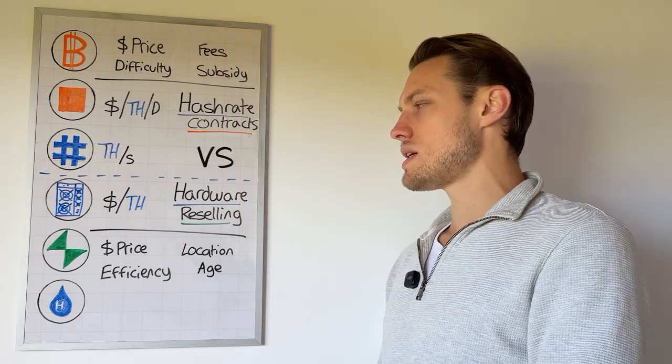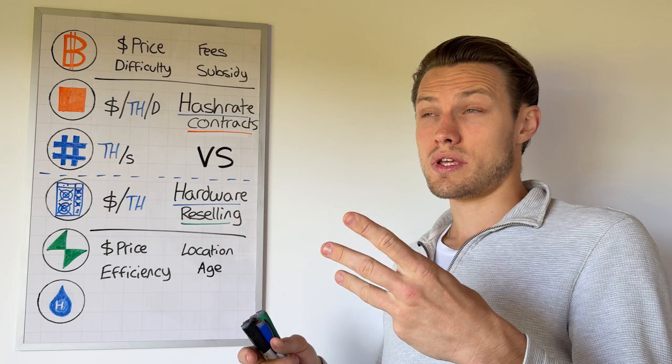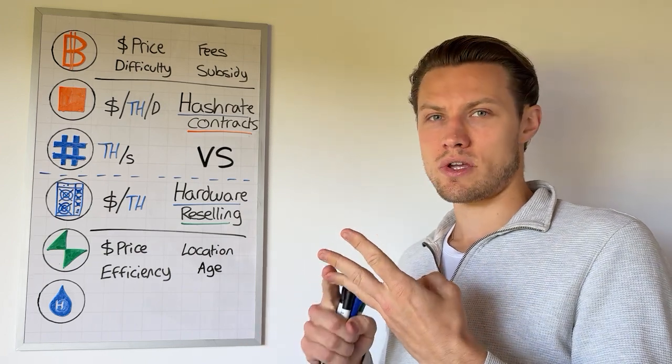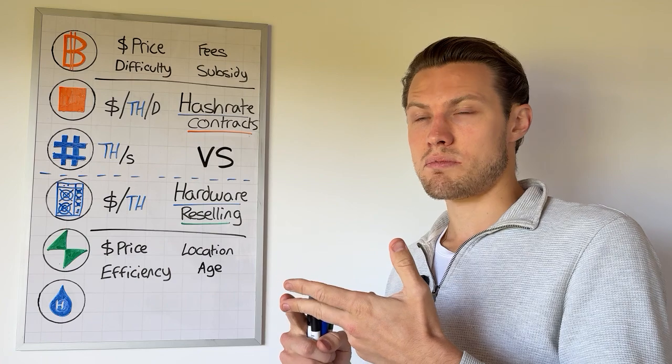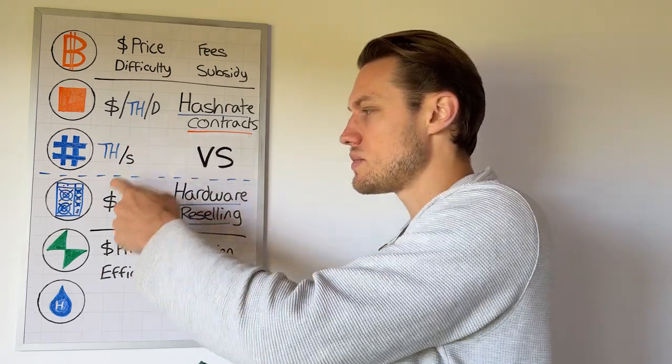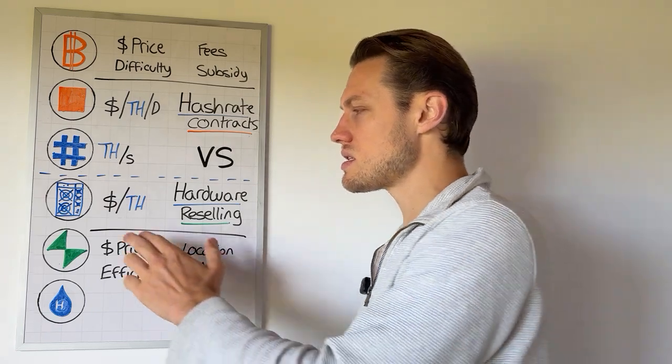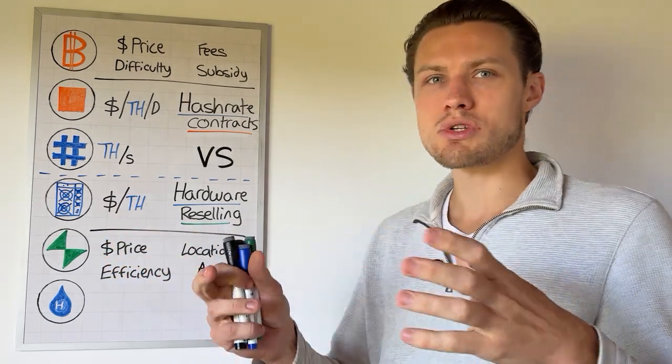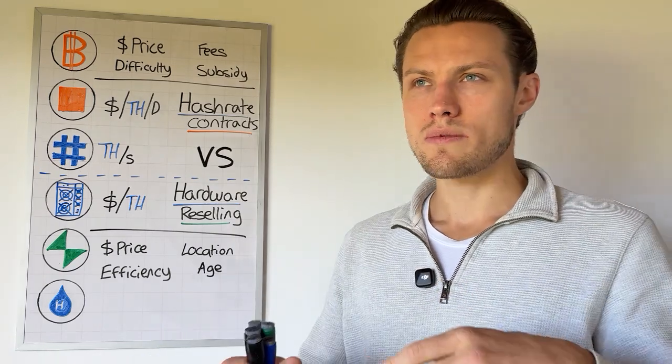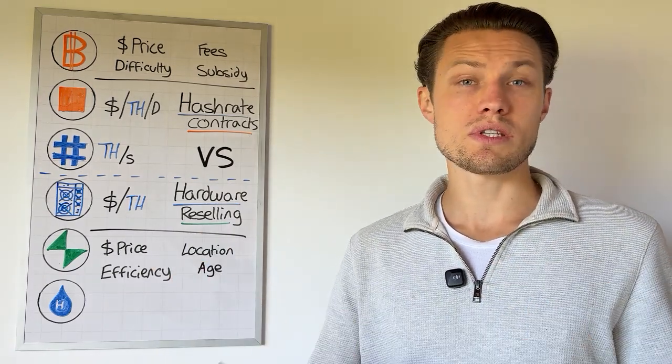So the first thing to understand is that Bitcoin mining hardware has three core things: how much power it uses, its efficiency which converts said power into hash rate. The key thing is this defines a price, a dollar per tera hash, where you take a machine that's $5,000, 200 tera hash, divide it down, $25 per tera hash.